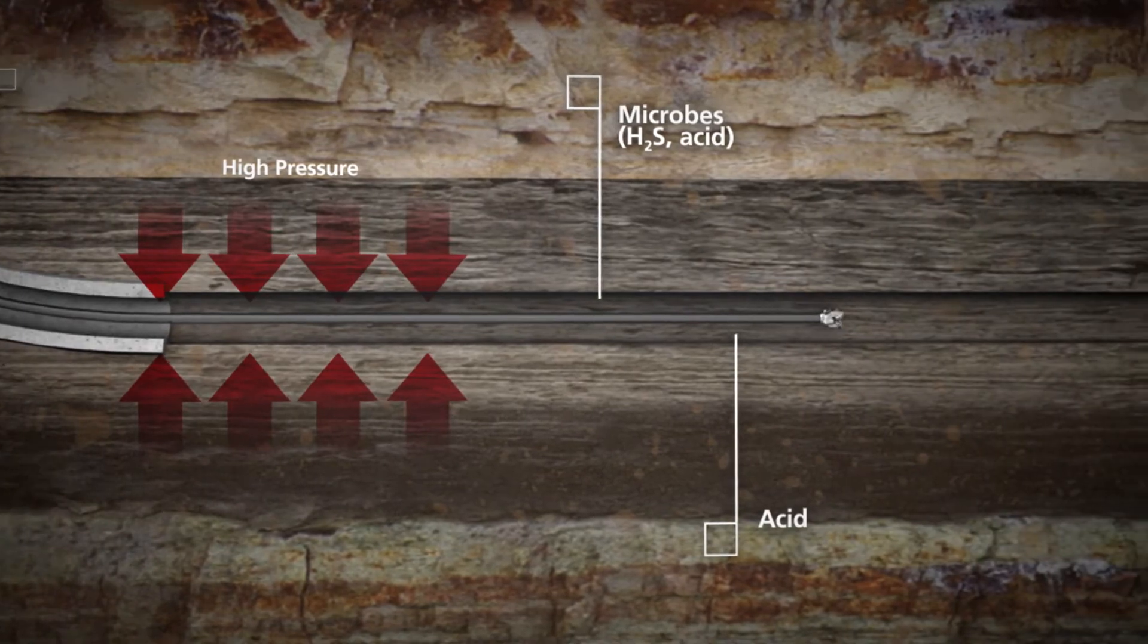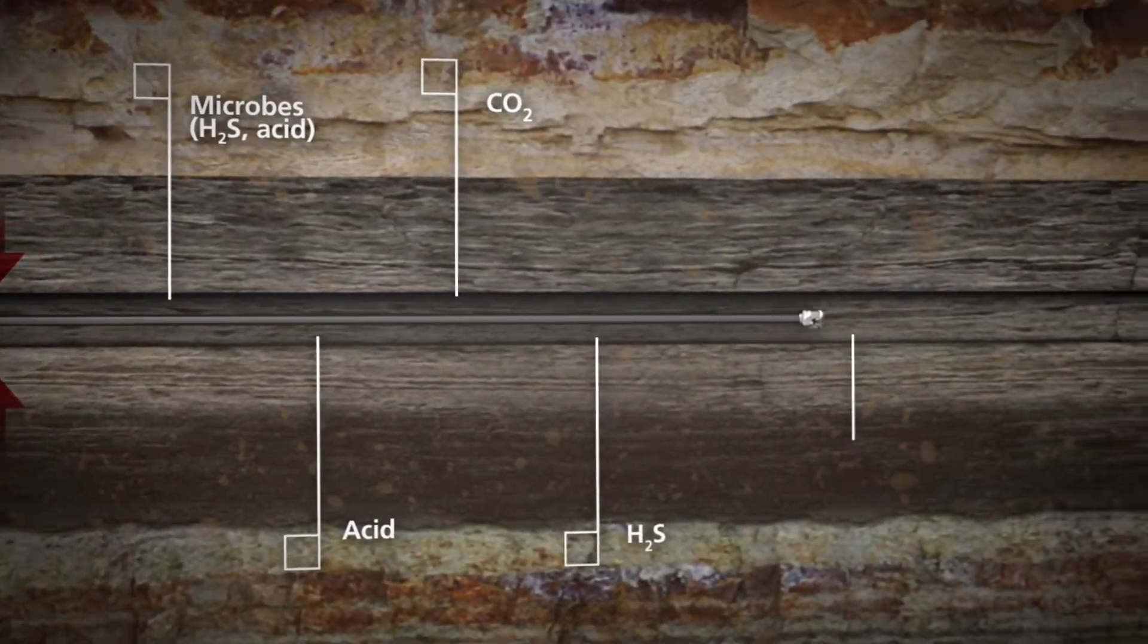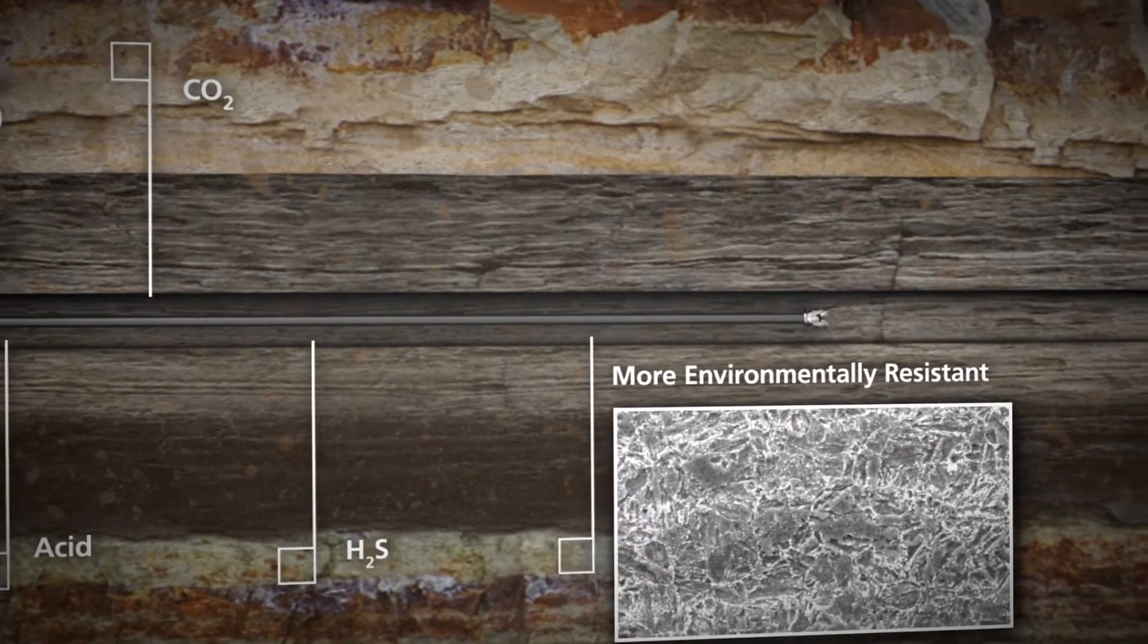Coiled tubing must be longer, larger, stronger, and more corrosion resistant and perform more reliably.